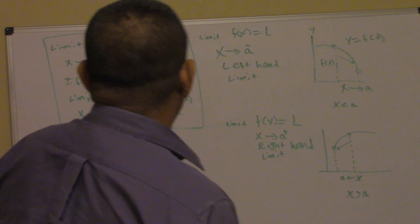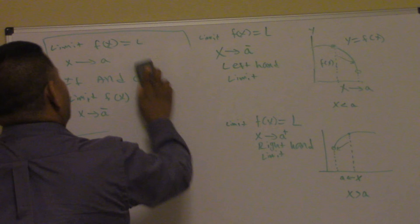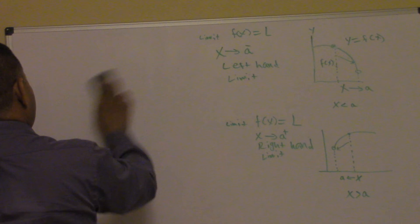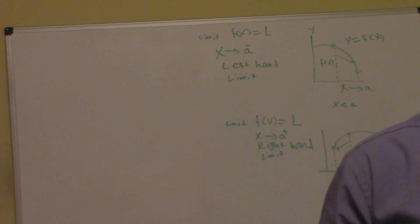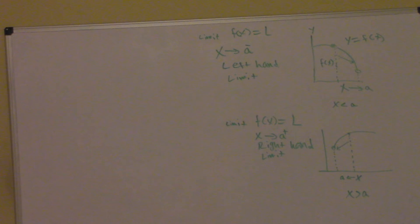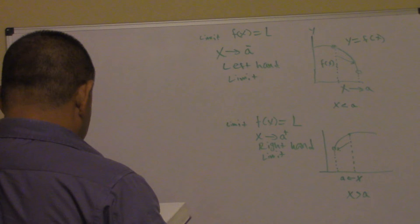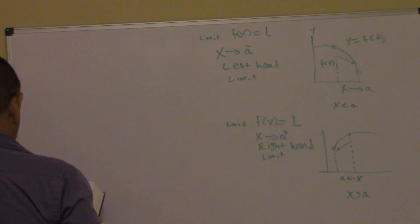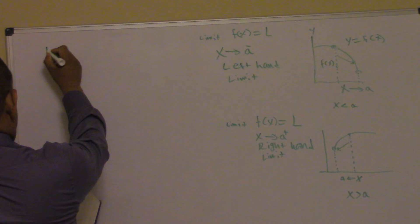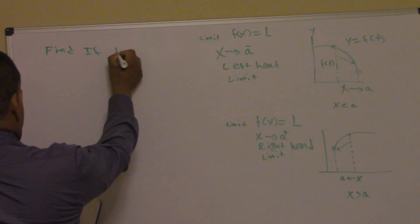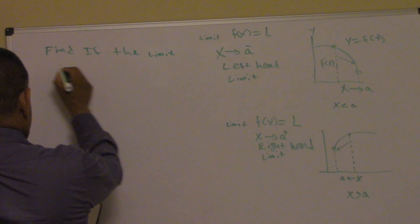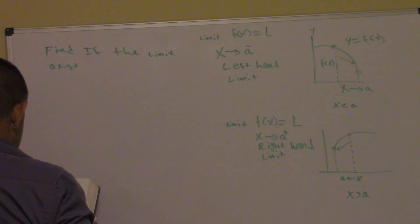We're going to do one problem to see what's going on. We're doing number 25 on SSI 2.1. The problem asks us to find if the limit exists.